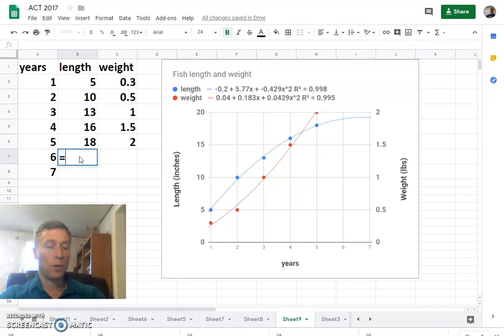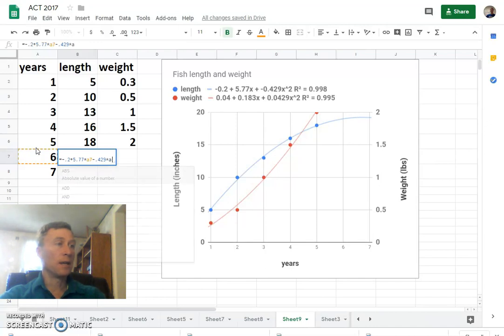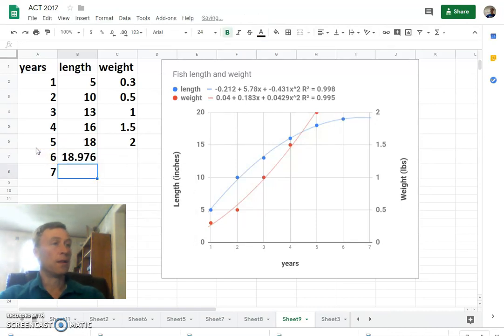So in the length, let's type in the equation equals. We'll just type it just like it is. It starts out negative 0.2 and adds 5.77x. Let's just multiply that by a7. So that's the sixth year. And then we're going to subtract 0.429 multiply that by x squared. So we'll say times a7 times a7 again. There we have it. After 6 years, it should be pretty close to 19 inches long.